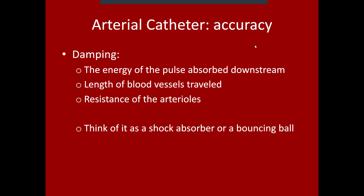Moving on to the calibration and accuracy of the arterial line — this is centered around a concept known as damping. Damping is basically the concept that the energy of the pulse is absorbed downstream, because that pulse is essentially a wave. As that wave is transmitted down the artery to the arterioles — those high-resistance vessels before gas exchange — some energy is dissipated along the way.